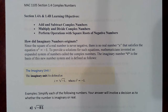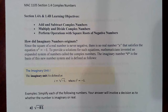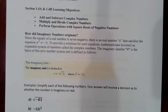This is MAC 1105, Section 1.4. We're going to be looking at various properties having to do with complex numbers, specifically addition and subtraction of complex numbers, as well as multiplication and division. And then we'll also be looking at different operations we can perform with square roots of negative numbers.